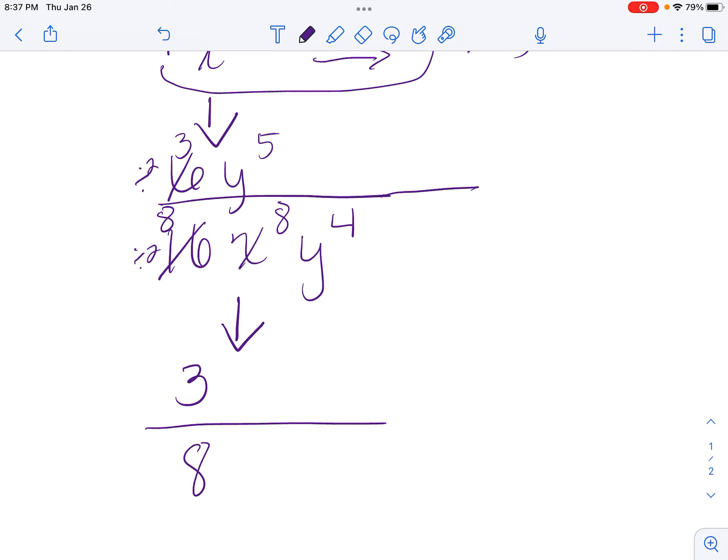Then I see there's only x to the 8th. So I'm going to bring it down and leave it where it is because it's positive. Then I look and see I have two different y's. One on top and one on bottom. I look for the highest exponent, which is on top. So I'm going to keep it on top. And then I subtract. 5 minus 4 is 1.